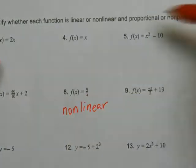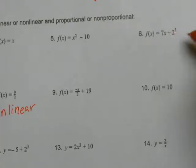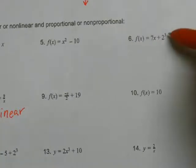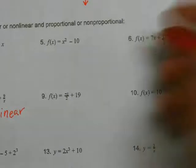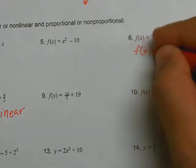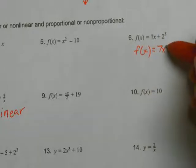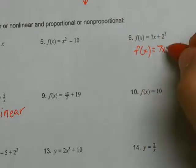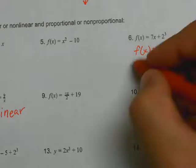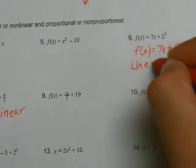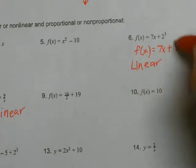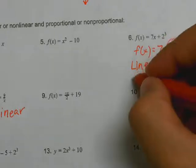Looking at number 6, 7x plus 2 cubed. Now don't let this confuse you. That cube is on this 2, which actually simplifies to f(x) = 7x + 8. So is there an exponent that's greater than one on x? No there's not. Is x in the denominator? No. So therefore this is linear. And since it has a b of 8, it is non-proportional.